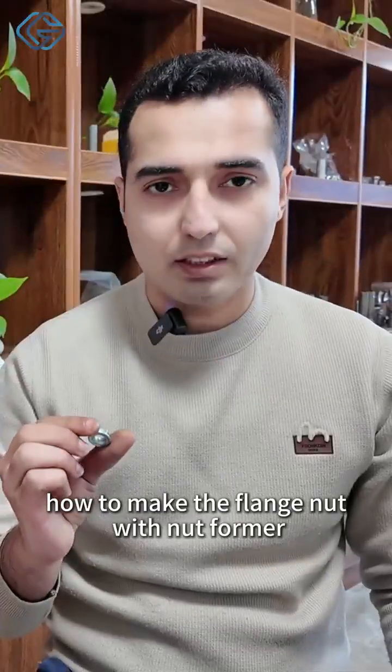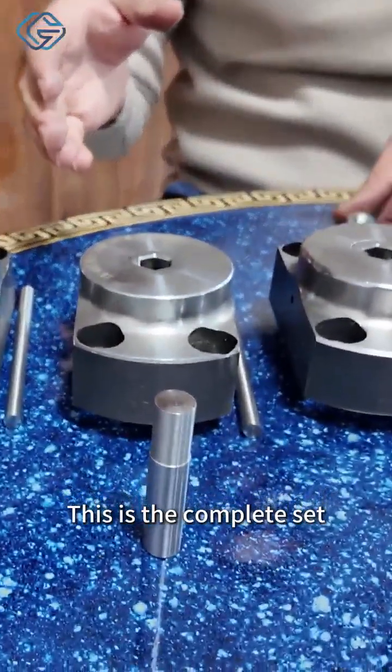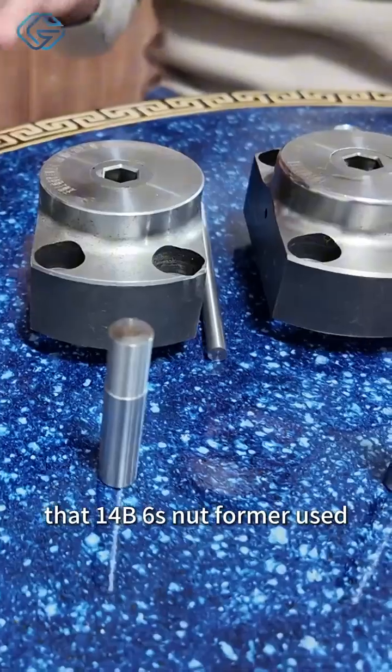How to make the flange nut with nut former. The tooling is like this one. This is the complete set that 14B6S nut former used.